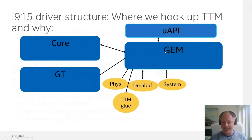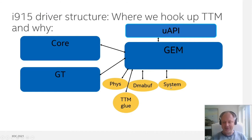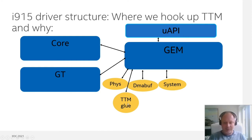The GEM component has a number of backends depending on where we want to allocate pages: the DIS backend, which is DMA-mapped memory allocated using the DMA API; the DMA-buf backend, which imports buffers from other drivers or from other instances of our own driver and exports them; and the system backend, which takes pages from shared memory objects and hands them to the GEM component. We choose to hook up TTM as a backend to allocate LMEM or VRAM pages, and for discrete we also use this for system pages.